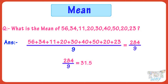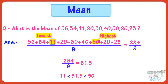Now check out what that means. Does 31.5 lie between the highest and lowest numbers in the list? Yes, it is between the lowest and the highest numbers in the list. Now let's find the other type of average.